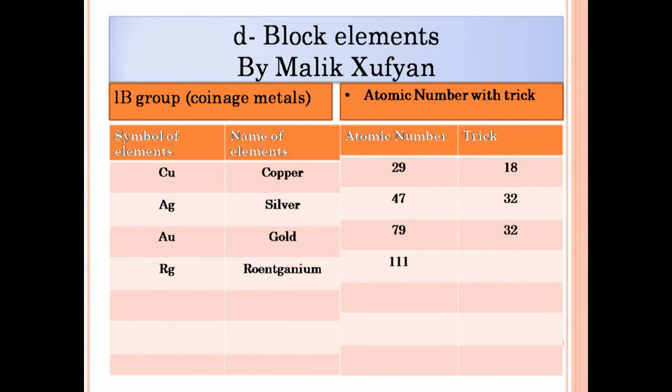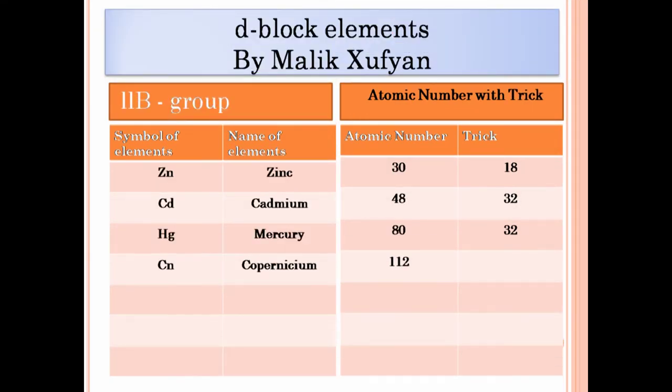Covalent bonding is two non-metals. This time they're kind and share electrons. They use dot-and-cross diagrams to show how they bond.